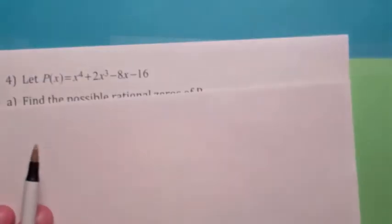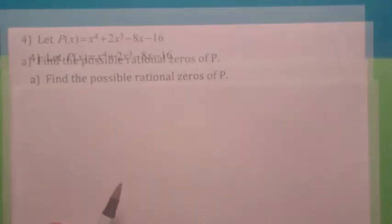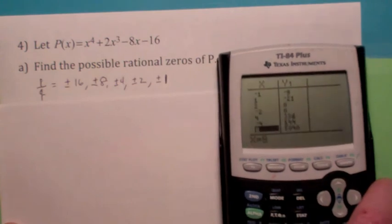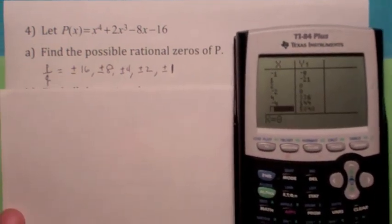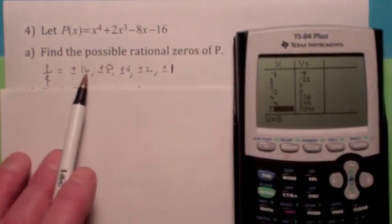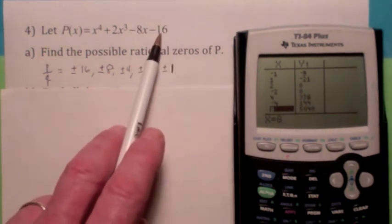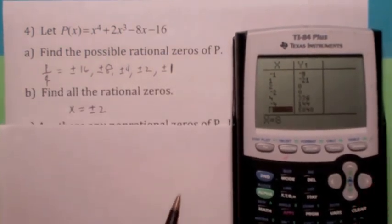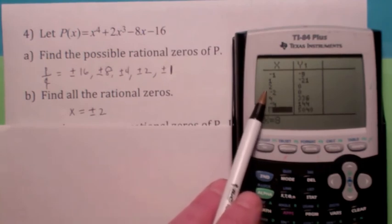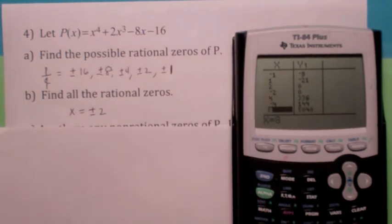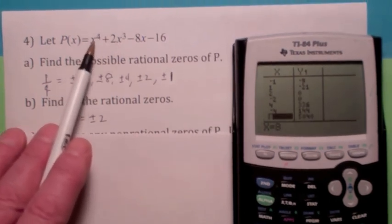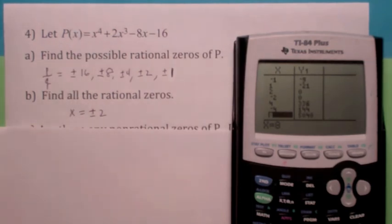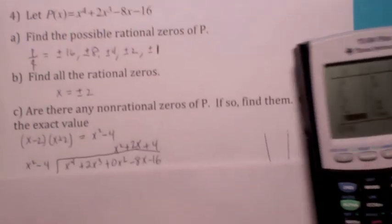All right. I think we've got time for one more here. Try this one. Okay, when I did this one, there's a lot of possibilities, aren't there? The possible factors of 16 over 1, so you get all these guys. When I used the table feature, I found there were only two rational zeros. 2 and negative 2. Now, again, the question is, well, there's some more zeros there. They're not going to be rational. They can either be irrational or non-real. So how do you find that?